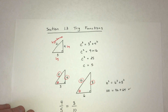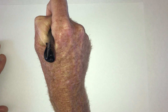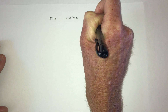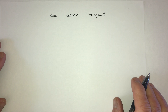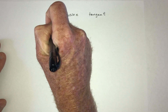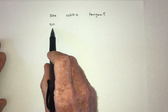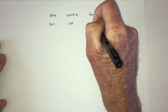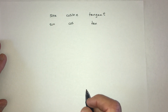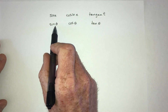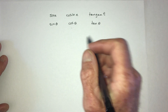Now, on to the actual definitions of the trig functions. The first three are called sine, cosine, and tangent. You write just the first three letters: sin (pronounced sine), cos (pronounced cosine), and tan (pronounced tangent). You put the angle in to say what angle you're talking about — so sine of theta, cosine of theta, tangent of theta.